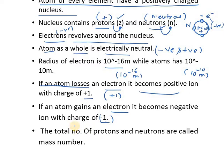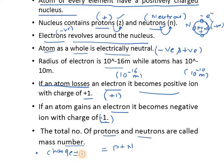The number of protons and neutrons together is called the mass number. Remember, the mass number of any atom is the addition of protons plus neutrons. Electrons are charged particles. The unit of charge is the coulomb. The magnitude of the charge of an electron is 1.602 × 10⁻¹⁹ coulombs, where C stands for coulomb. Important point: the charge of an electron is 1.602 × 10⁻¹⁹ coulombs.